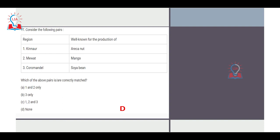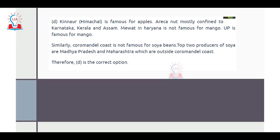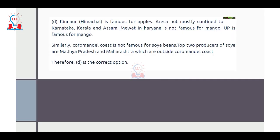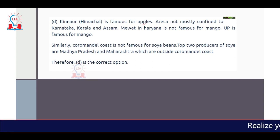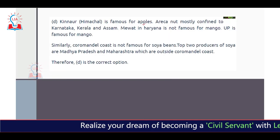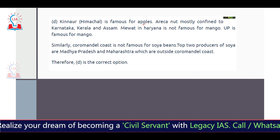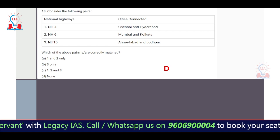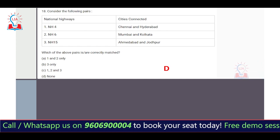The match-the-following question asks which regions are known for which crop: Kinnaur–areca nut, Mewat–mango, Coromandel Coast–soybean. The correct answer is D — none are correctly matched. Kinnaur, a valley in Himachal Pradesh, is famous for apples, not areca nut. Areca nut is mainly produced in Karnataka, Kerala, and Assam. Mewat in Haryana is not famous for mango — the nearby state of Uttar Pradesh is. The Coromandel Coast is not famous for soybean; top producers are Madhya Pradesh and Maharashtra.